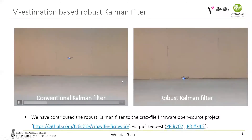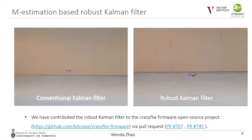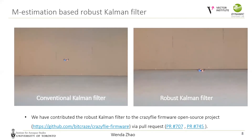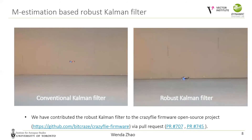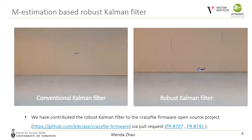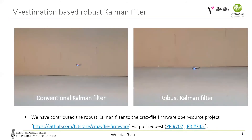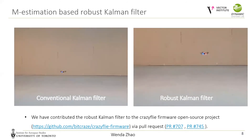We implemented the robust Kalman filter onboard a CrazyFlie nano-quadrotor. A comparison of the hovering performance is shown in the videos. With the conventional Kalman filter, the quadrotor is easily affected by the outlier measurements and it jumps around under a hovering command. With the robust filtering, the hovering performance is much more stable. We have contributed the robust filter to the CrazyFlie firmware open-source project and we encourage CrazyFlie users to check out this new functionality.